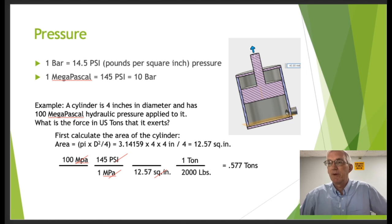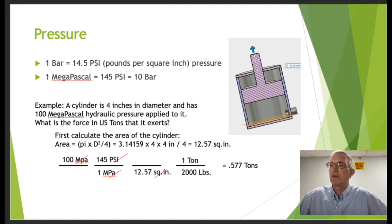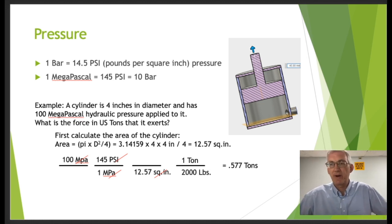Now let's look at pressure. Pressure is measured in bar, and 1 bar equals 14.5 psi — that's 14.5 pounds per square inch. One megapascal equals 145 psi, which also equals 10 bar. These are values you can find in a table.